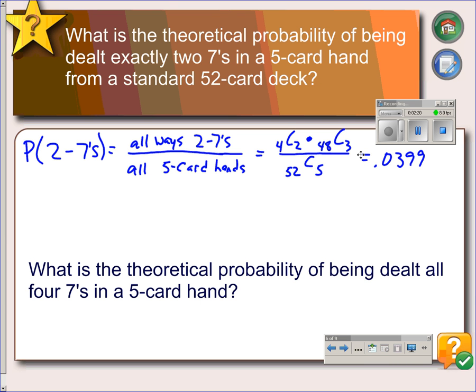Our second example: what is the theoretical probability of being dealt all four sevens in a five-card hand? So, the probability of four sevens.